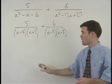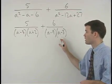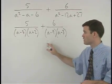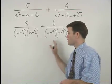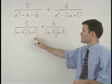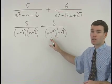Notice that these two denominators share a factor of (a minus 3). So their common denominator would include the (a minus 3) that they share times (a plus 2) times (a minus 9).